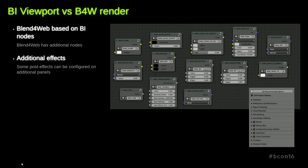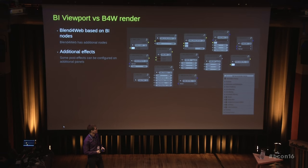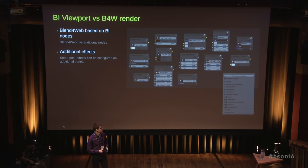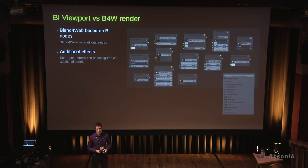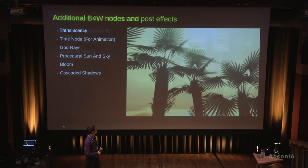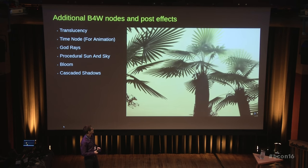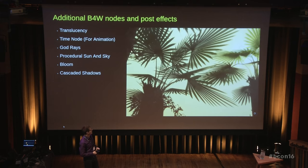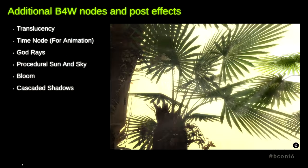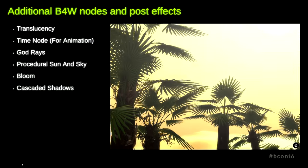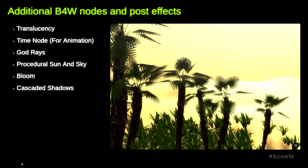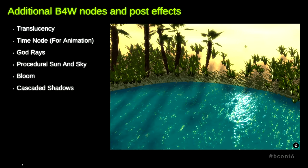Blend4Web also has its own extensions for the shading node system and for additional effects, which can be configured on additional panels. Let's look at some live examples to show how these extensions work. The first example is this sunny oasis. You can see translucency — it's the translucent leaves of a palm tree. You can see bloom of the environment.